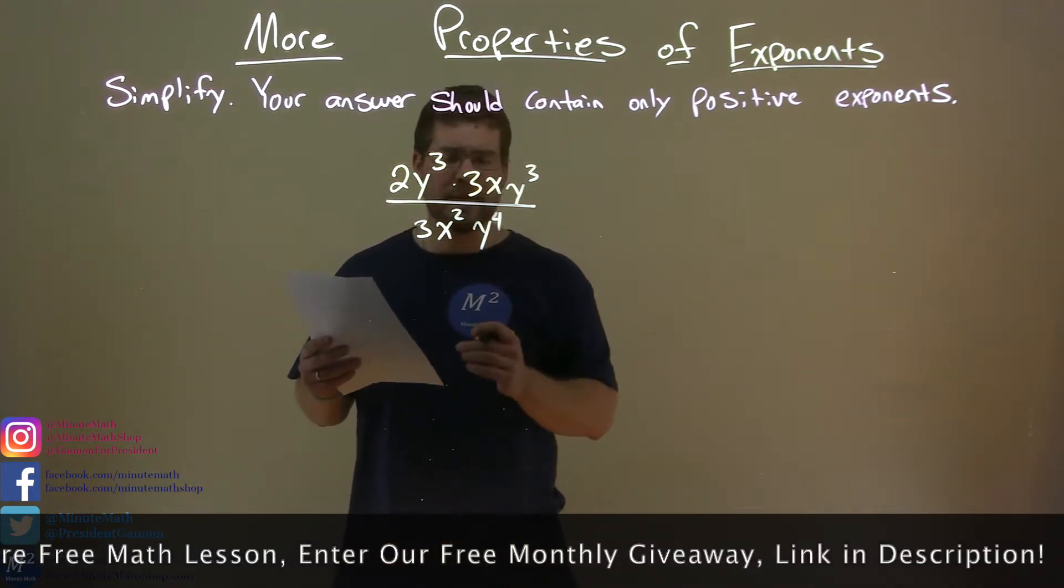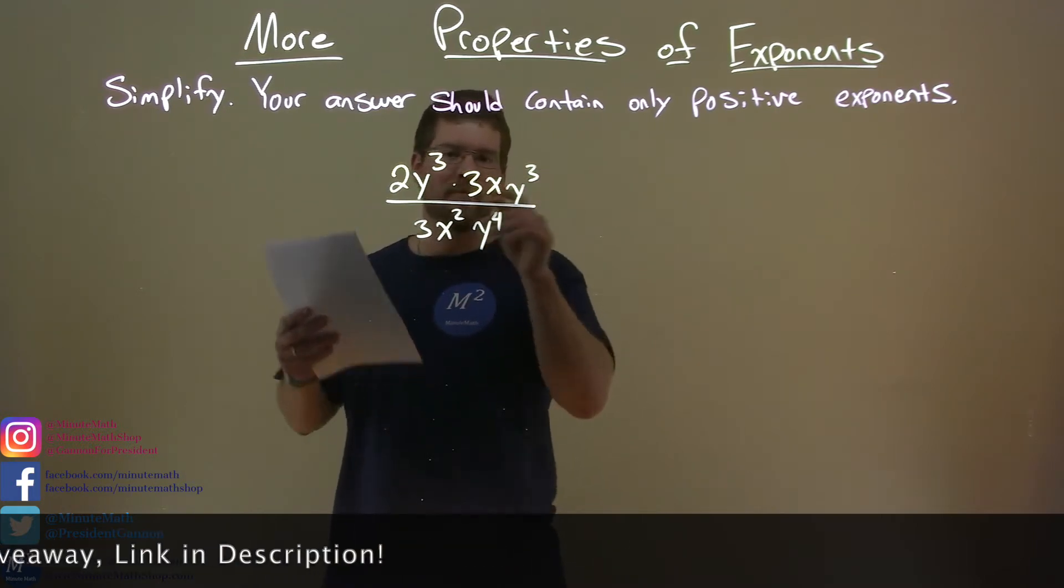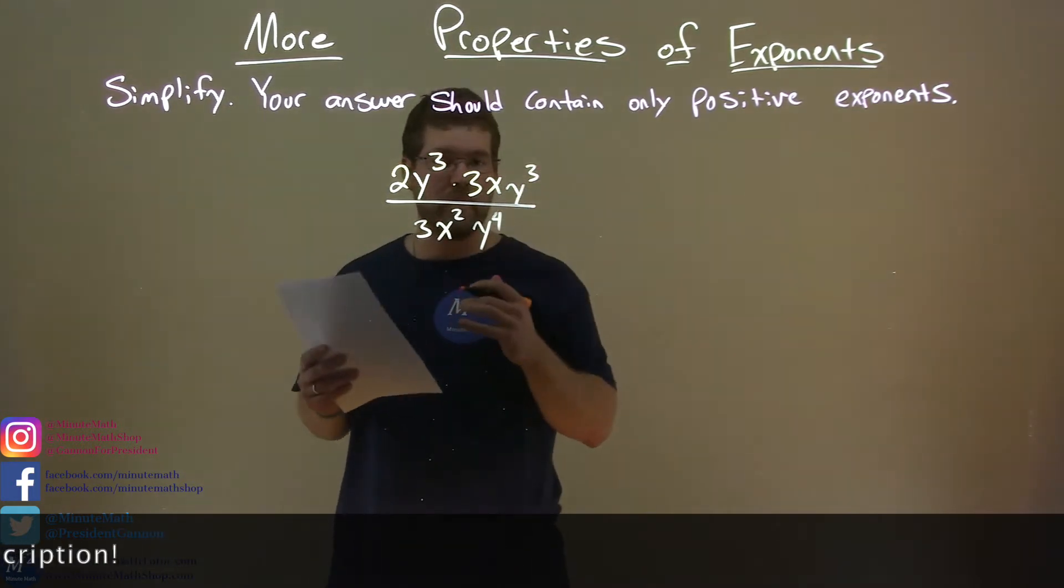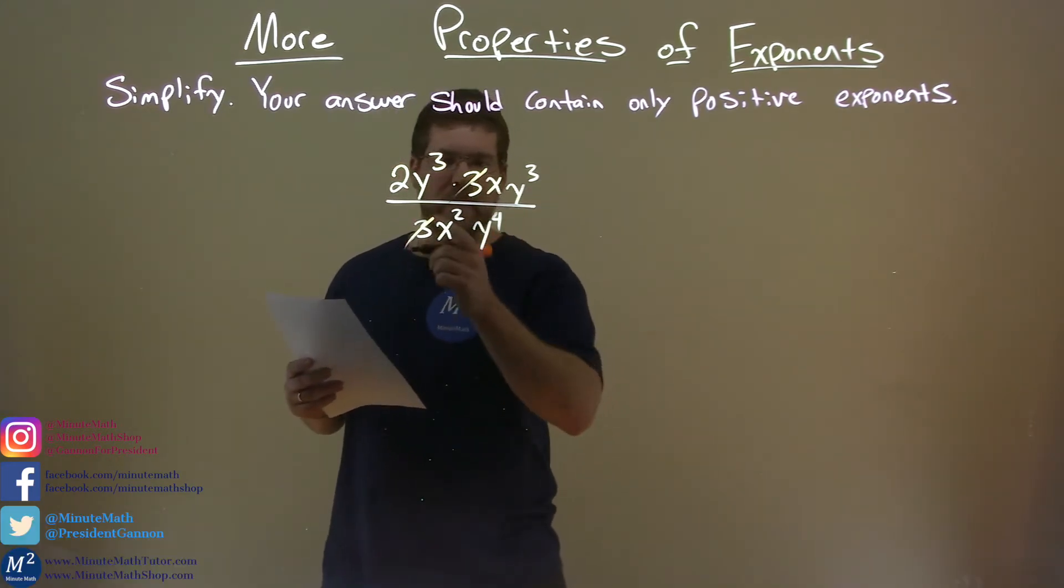First step here. What I try to do, if I can, is eliminate some things before I simplify on the numerator and the denominator. We see a 3 here and this 3 here. They can cancel each other out.